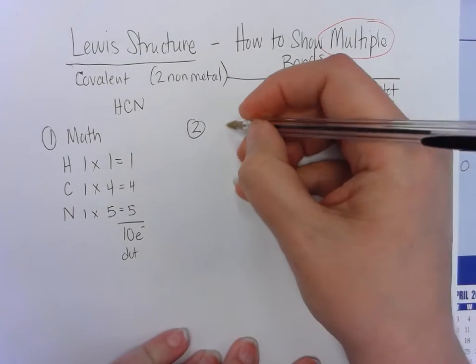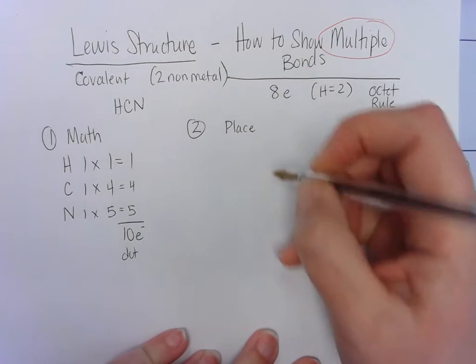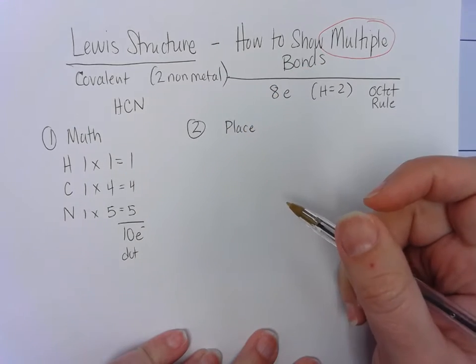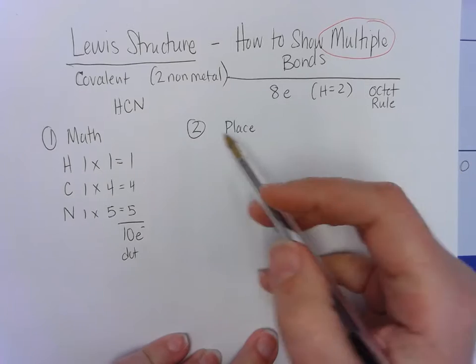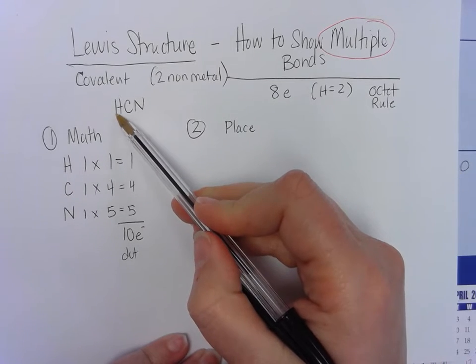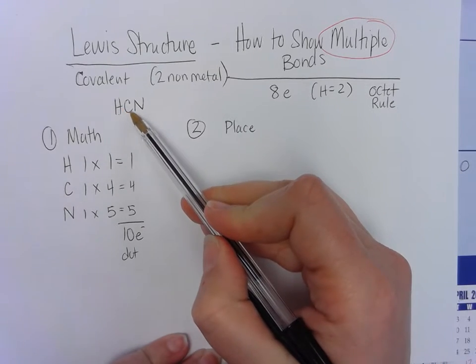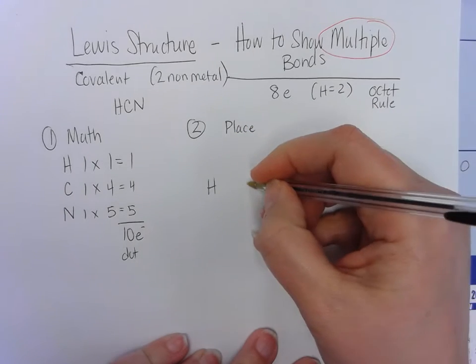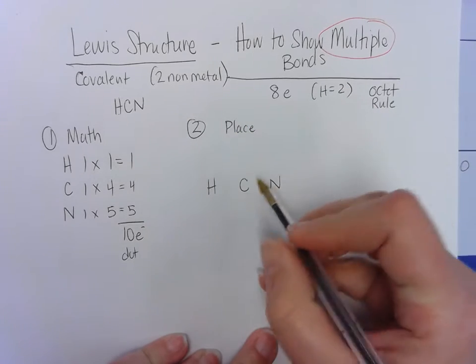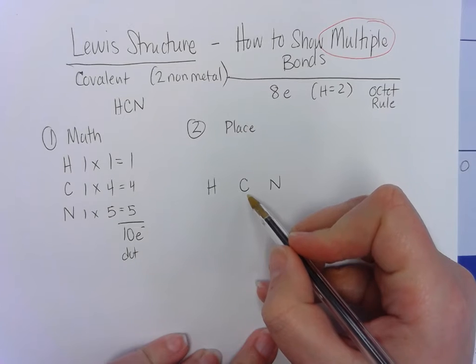All right, step number two, if you remember, was place our elements. So we need to place something in the center that is not hydrogen. Hydrogen cannot go in the center. Our first element is hydrogen, so we're going to skip that. Typically, you go with the next one, so our molecule is going to be in this order with carbon in our center.